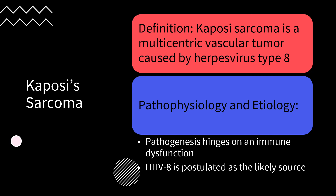Kaposi sarcoma ensues from complex and multifactorial events including immunosuppression. A crucial role of viral agents has been supposed since the 1950s. Human herpes virus HHV-8 has been found in saliva and semen and may spread through contact with saliva, kissing, and sexual activity.